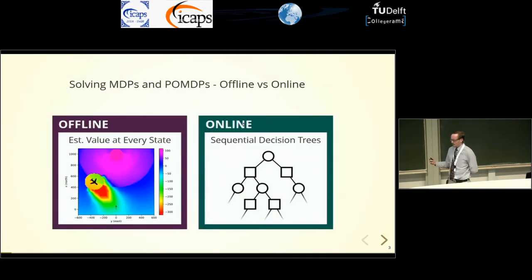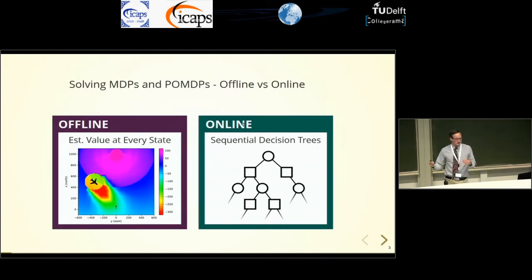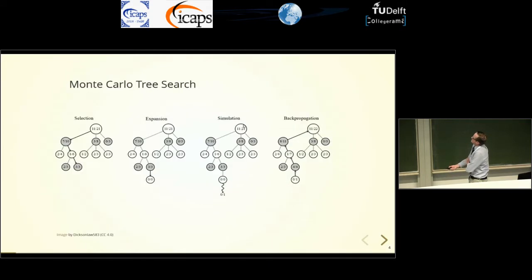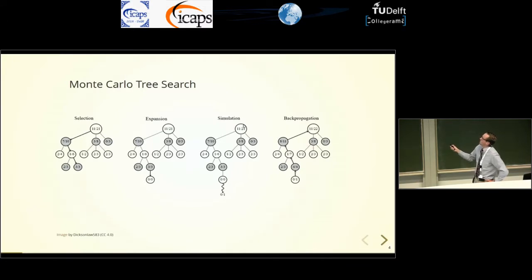There are two basic ways of doing this. You can solve it offline where you calculate the value function — that was the first talk in this session. And you can also do it online by constructing a tree at every time step, which is what Early just talked about. Constructing this tree is typically done with some variant of Monte Carlo tree search, where you find a good sequence of actions through your tree, go down to the bottom, expand a node, run a rollout simulation, and then propagate the results back up. You maintain an estimate of the Q value for every action node in your tree.